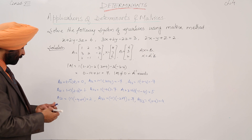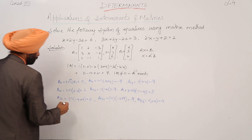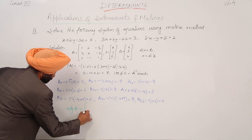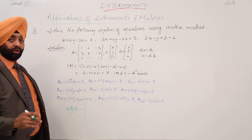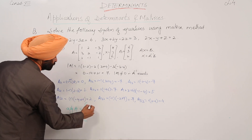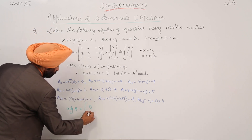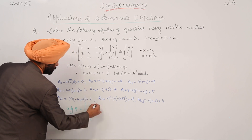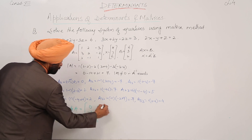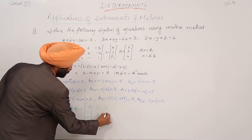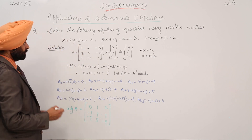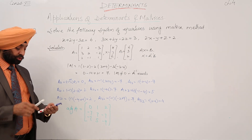Now, adjoint of A is equal to the cofactors written in reverse order. So we are having: row 1 is 0, 1, 2; row 2 is minus 7, 7, minus 7; row 3 is minus 7, 5, minus 4. This is the adjoint matrix.